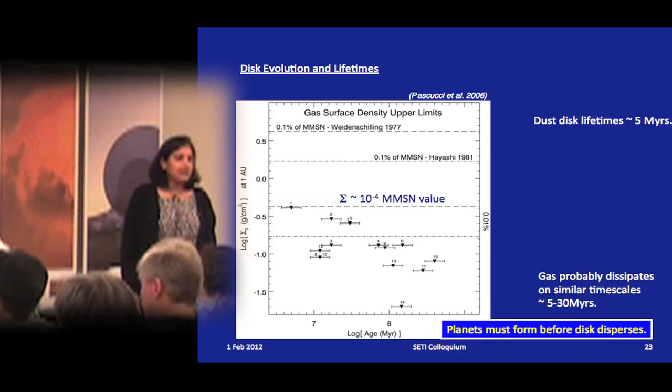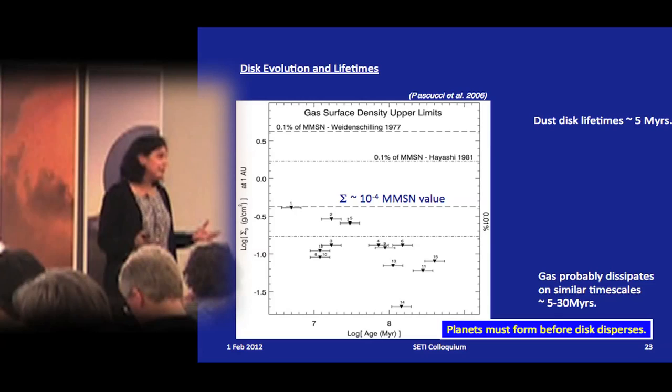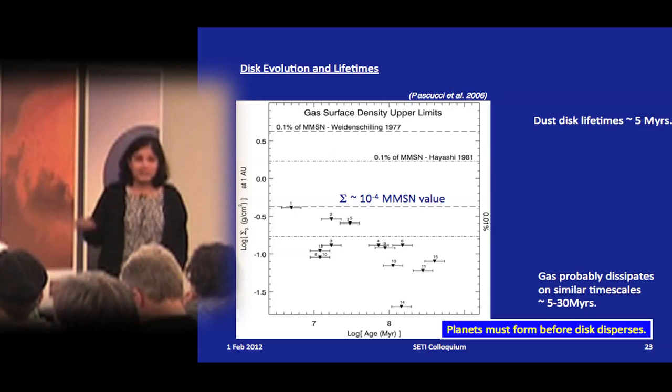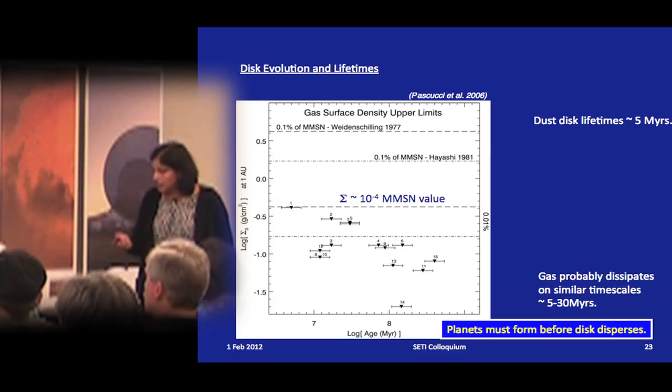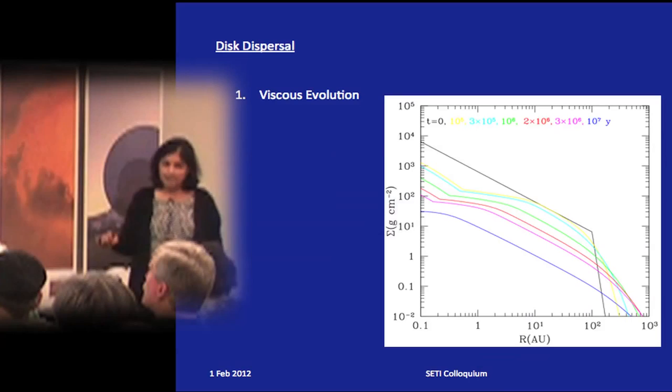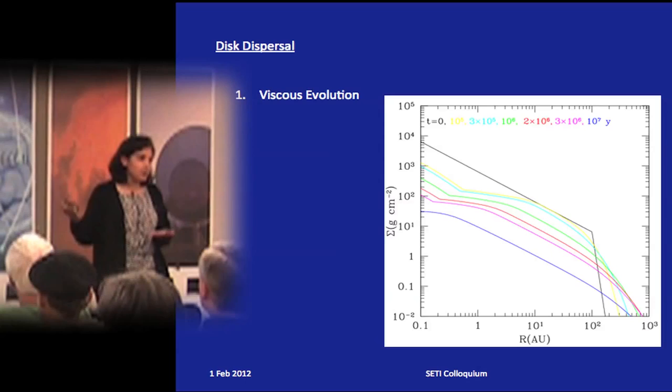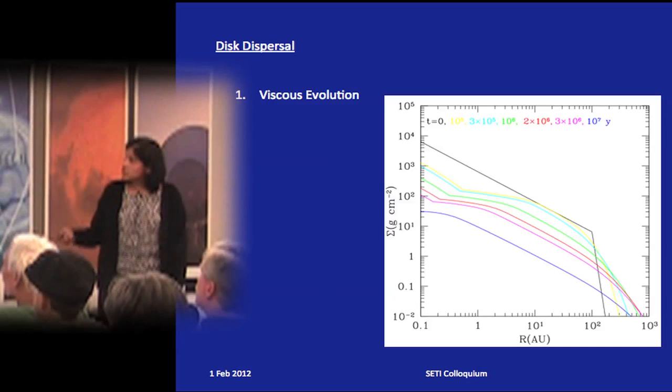The key point from a planet formation perspective is that planets must obviously form before the disc disperses, setting a constraint on the time available to form planets. The disc does disperse, so we need to understand what drives this. The first and earliest proposed mechanism is viscous evolution — the process by which the star accretes mass from the disc — and we do see accretion signatures.